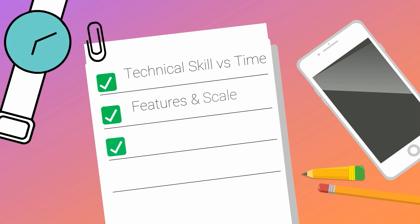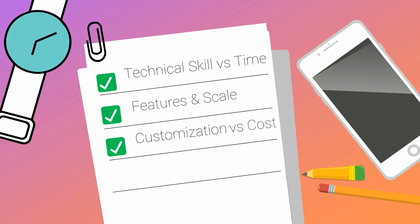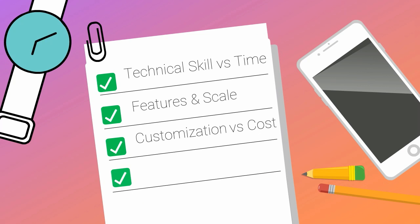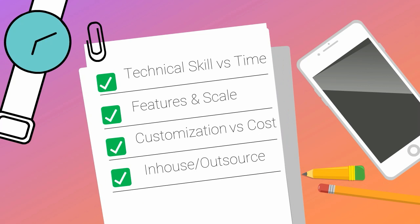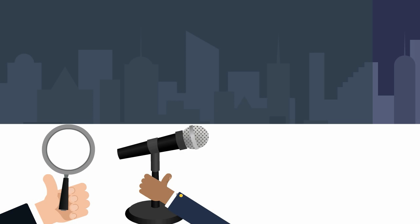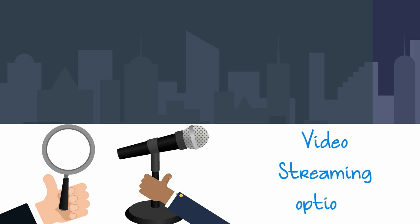The evaluation criteria used are: technical skills, features, scale, customization, cost, time, and in-house versus outsource. A separate section of the video discusses options for course video streaming on an e-learning website. So here are the four options to build a site.